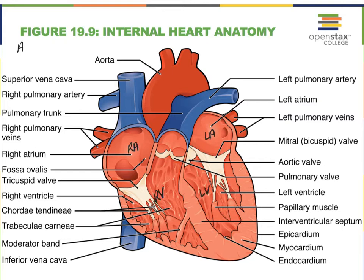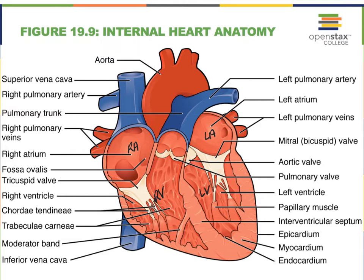Those valves we call atrioventricular valves in general. Atrioventricular valves are valves that separate — they sit in between the atria and the ventricles. So we can talk about the right atrioventricular valve and the left atrioventricular valve.